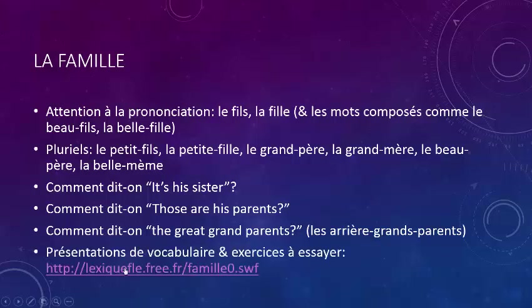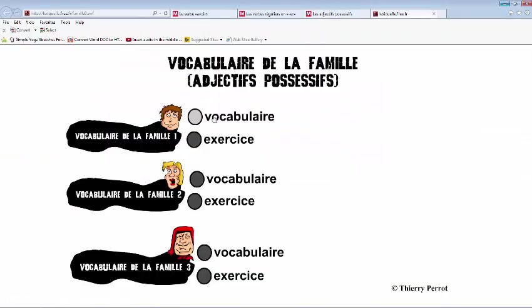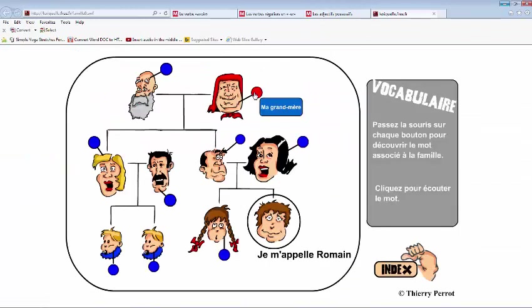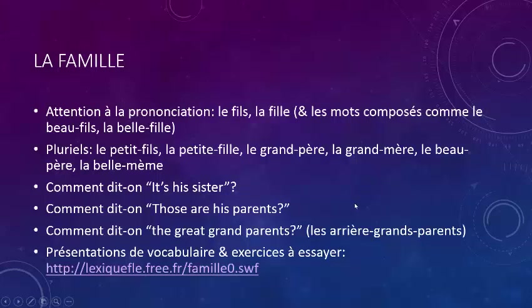There's a grammar presentation on the Français Interactif website with exercises for family vocabulary. For example, one exercise shows Romain's family tree and asks you to click on specific members — click on mon père to identify Romain's father. Try that exercise.